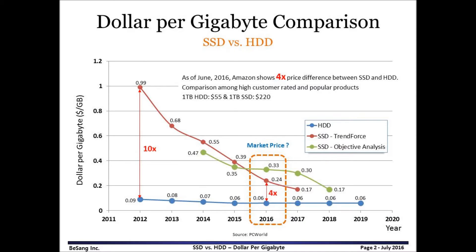Last time I discussed dollar per gigabyte of SSD between year 2012 to year 2019. TrendForce predicts the price gap between SSD and HDD in 2016 would be 4 times. I verified the price gap at Amazon.com and found an interesting observation: the price gap between SSD and HDD is much different depending on memory capacity.